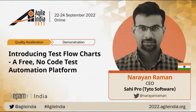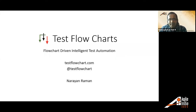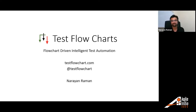Good evening everyone. Welcome to the introduction of Test Flowcharts, a free no-code test automation platform by Narayan Raman. Narayan is the CEO of Sahee Pro Tito Software Private Limited. He is the author of Sahi, an open source test automation tool equivalent to Selenium, which he commercialized as Sahee Pro. He has been working in test automation solutions for the last 15 years and recently launched the product Test Flowcharts. Over to you, Narayan.